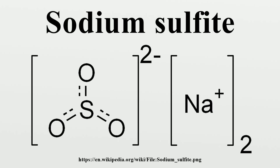Na2SO3 + 2 HCl → 2 NaCl + SO2 + H2O. Sodium sulfite is made industrially by reacting sulfur dioxide with a solution of sodium carbonate. The initial combination generates sodium bisulfite, which is converted to the sulfite by reaction with sodium hydroxide or sodium carbonate. The overall reaction is: SO2 + Na2CO3 → NaHSO3 + CO2.